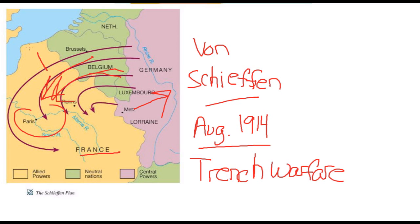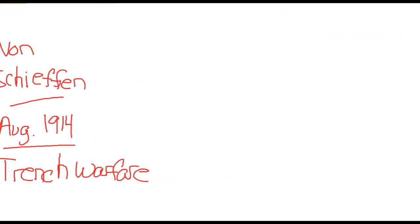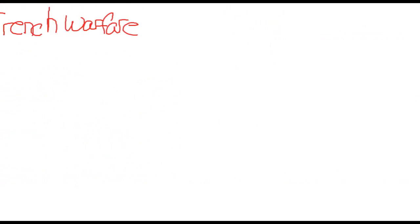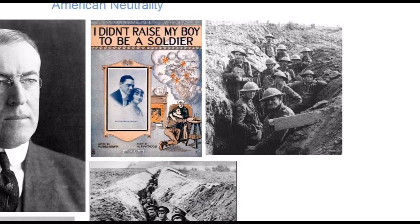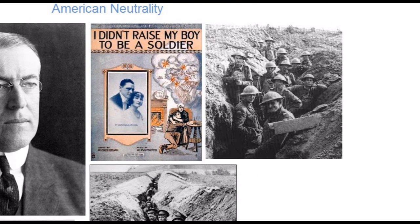The trench line ultimately stretched from the North Sea all the way across eastern France down to neutral Switzerland. This is where the majority of the fighting took place between the fall of 1914 and the fall of 1918 — a conflict in which millions and millions of men lost their lives in really the most horrible ways possible, warfare that in many ways had never been seen before in the history of the world.